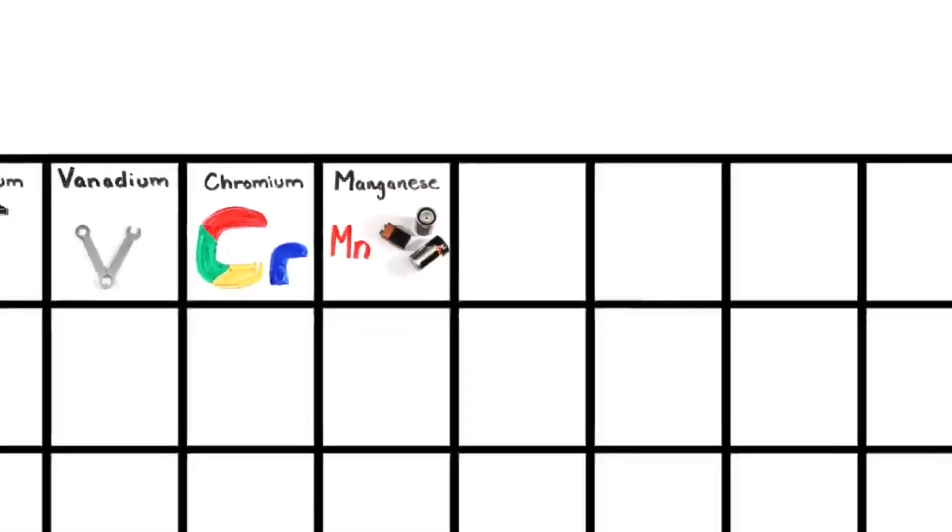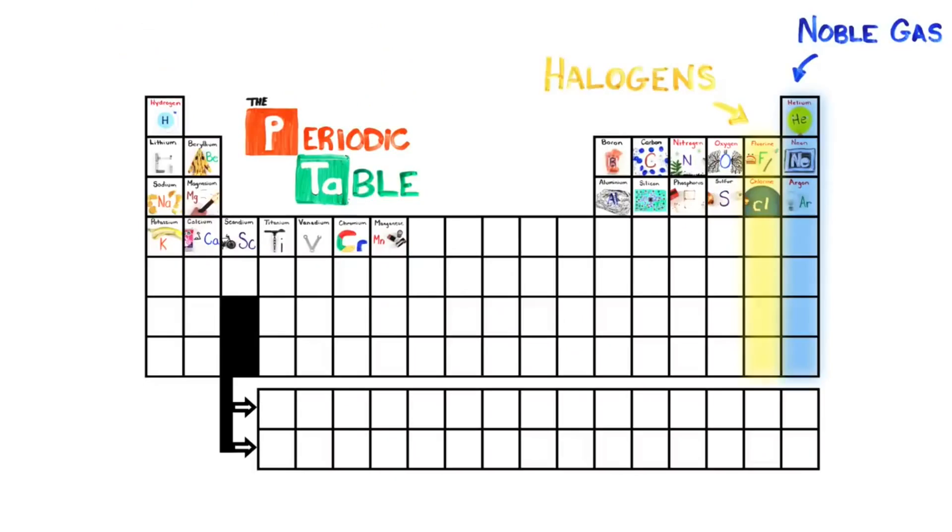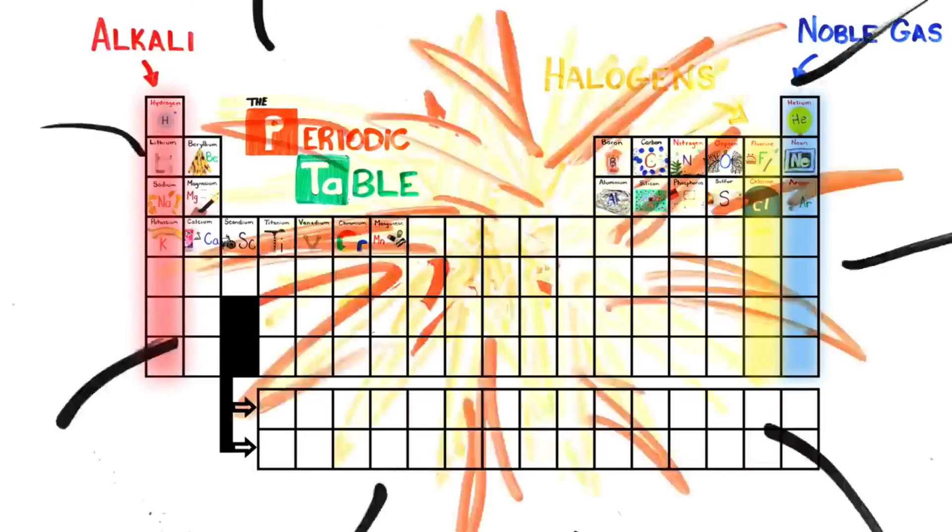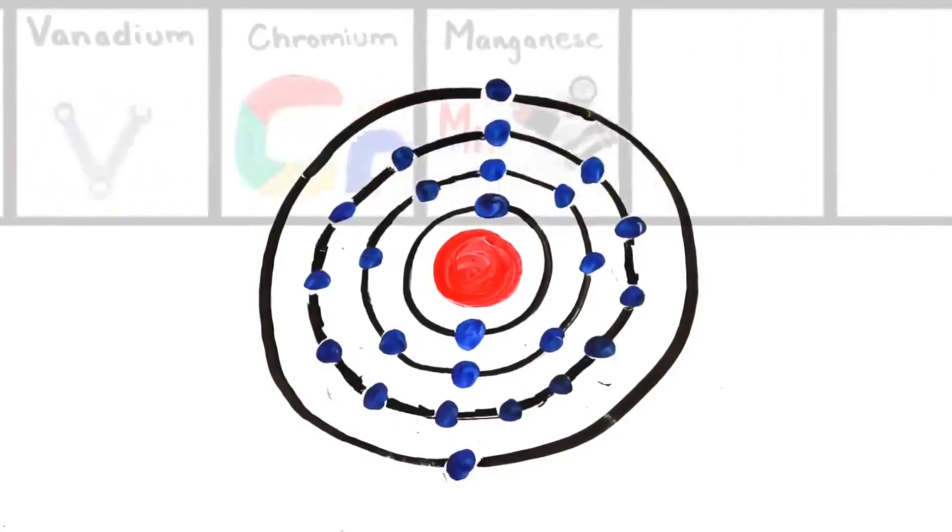Manganese. This is the Periodic Table, Noble gas is stable. Halogens and Alkali react aggressively. Each period will see new outer shells, electrons are added, moving to the right.